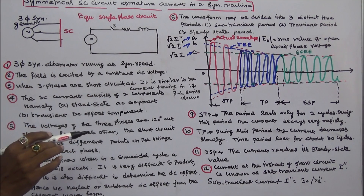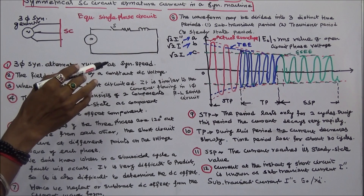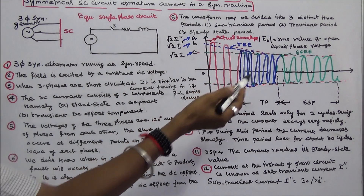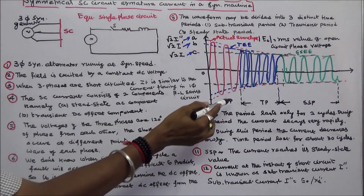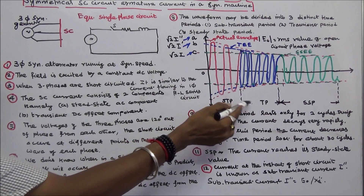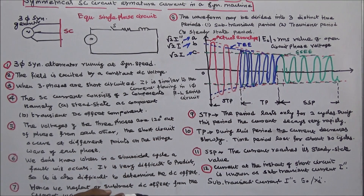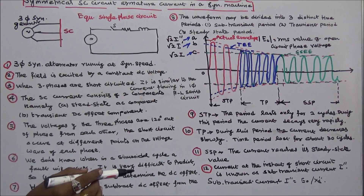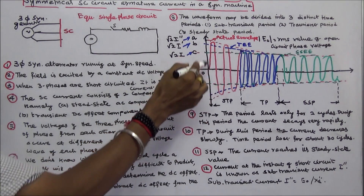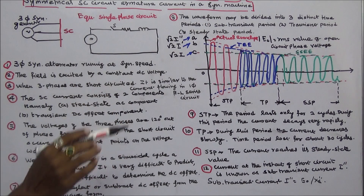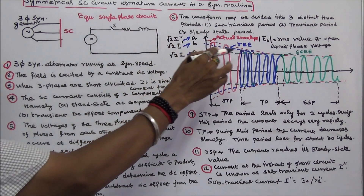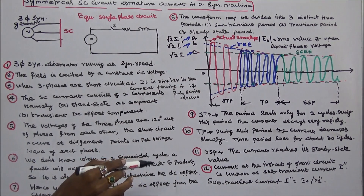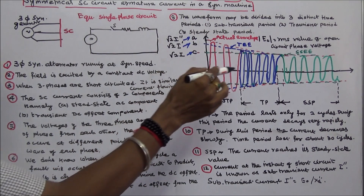We don't know when in a sinusoidal cycle a fault will occur. It is very difficult to predict. Hence, we neglect or subtract the DC offset from the current waveform. The waveform may be divided into three distinct time periods: one is the sub-transient period, second is the transient period, and third is the steady-state period. Here, E0 is the RMS value of open-circuit phase voltage. The sub-transient period lasts only for two cycles, during which the current decays very rapidly. The transient period lasts for about 30 cycles, during which the current decreases slowly.